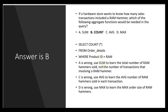We'd write: SELECT COUNT(*) FROM order_details WHERE product_id = 'RAM'. Answer A (SUM) is wrong — we'd use SUM to learn the total number of RAM hammers sold. Answer C is wrong — we'd use AVG to learn the average number of RAM hammers sold per transaction. Answer D is wrong — we'd use MAX to learn the largest quantity of RAM hammers sold in a single transaction. Here, we only want the number of transactions, so it's COUNT.